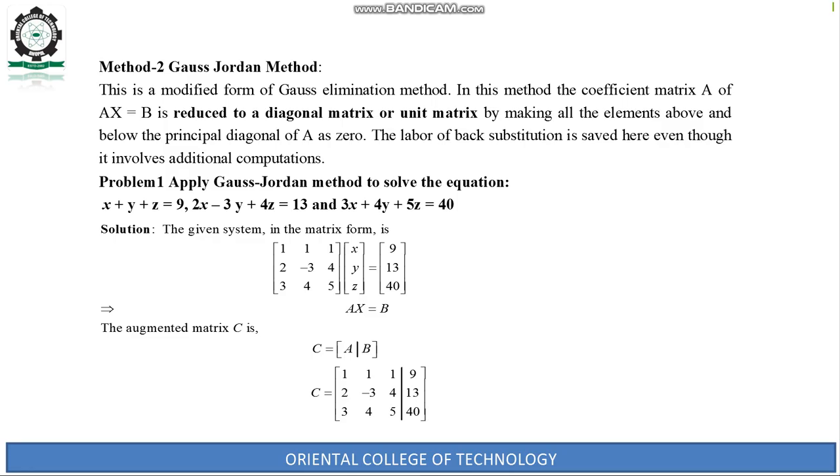The variable matrix is X containing x, y, z, and B equals 9, 13, 40. The augmented matrix C = [A|B].